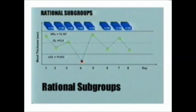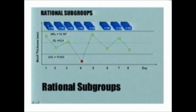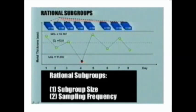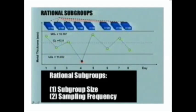In constructing a control chart, we need these rational subgroups. The question is: how do we go about selecting these samples? What are the basic criteria? Like any sample selection, there are always two issues to consider. One is the sample size, and the other — especially with control charts — is the sampling frequency: how often do we select a sample. The sampling frequency is directly associated with the timeframe.